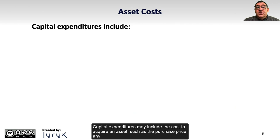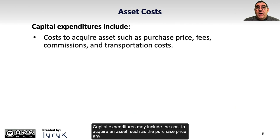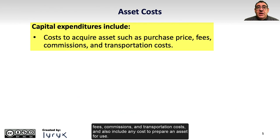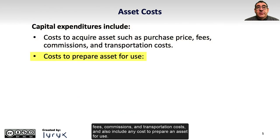Capital expenditures may include the cost to acquire an asset, such as the purchase price, any fees, commissions, and transportation costs, and also include any cost to prepare an asset for use.